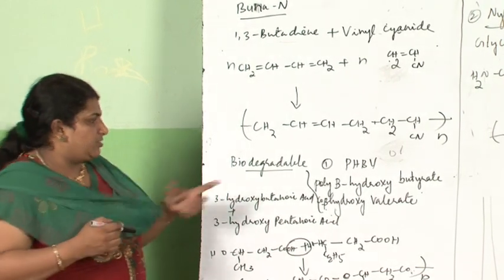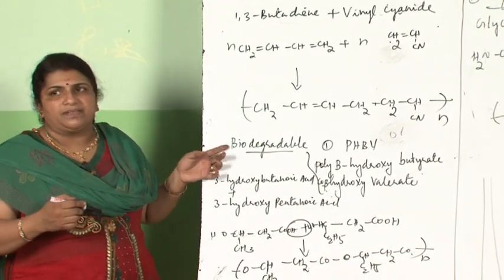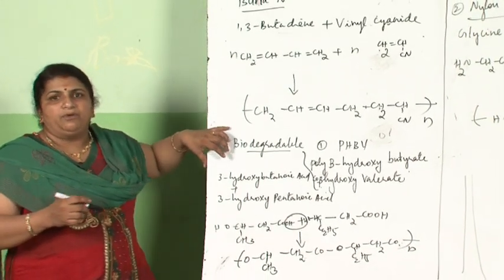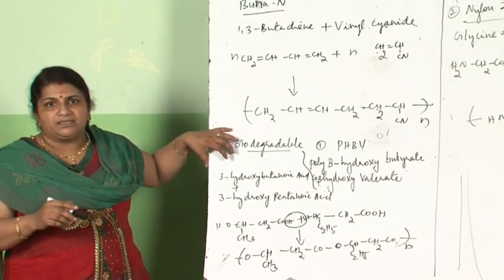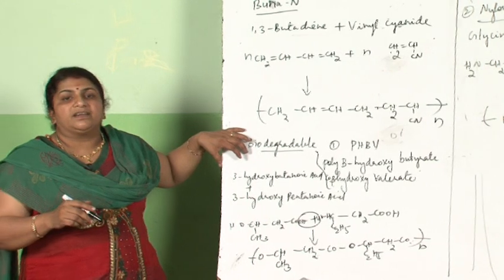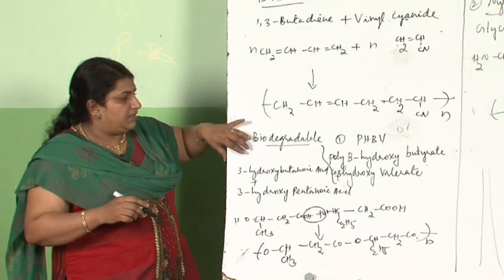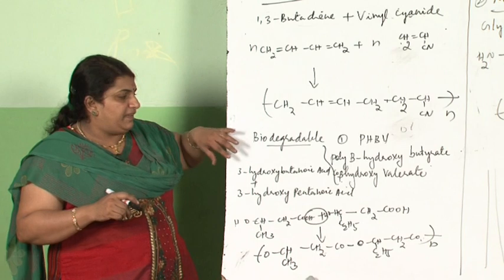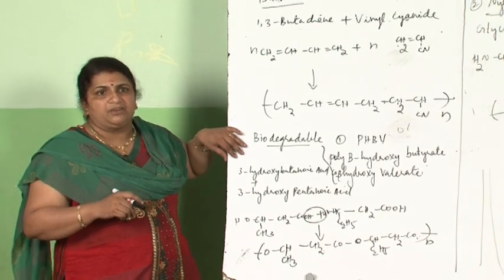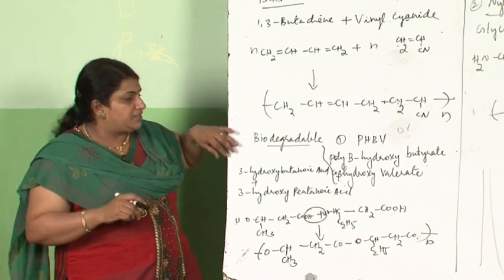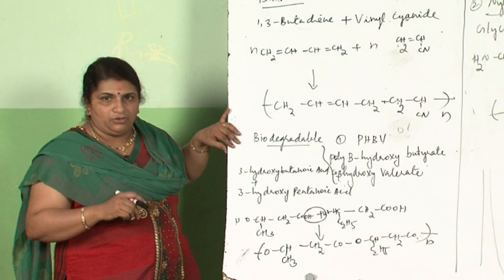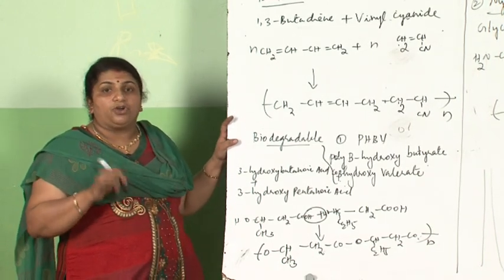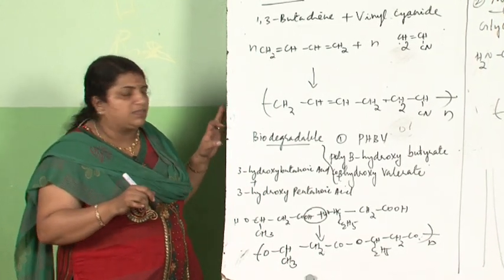This is also one of the most important questions in examinations. Now the major problem we are facing is degradation of plastics. The earth's surface in so many places is covered with plastics that cannot be degraded, and the fertility of the soil is being lost. So biodegradable polymers play a very important role.